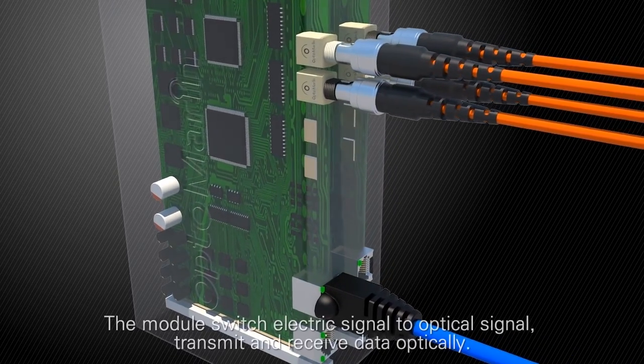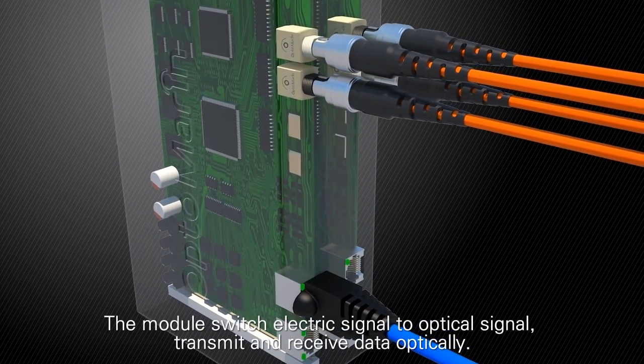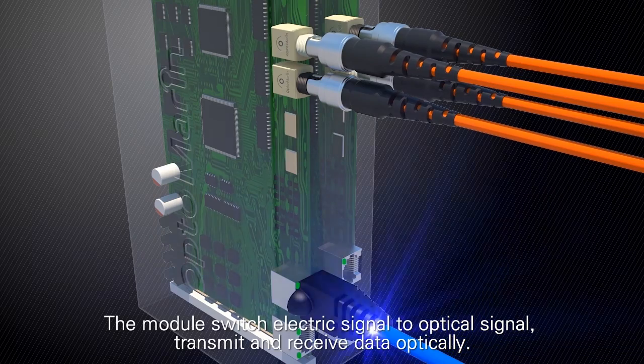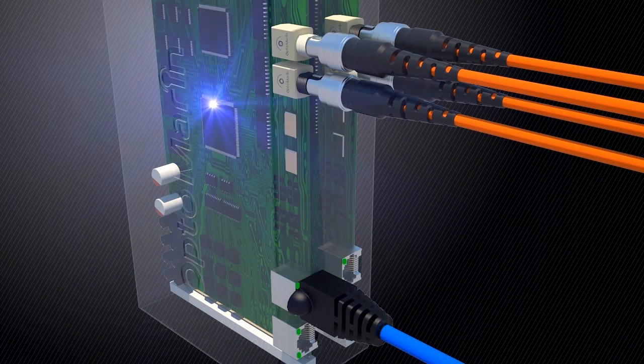Optical communication in industry converts electric signal to optical signal in order to transmit and receive data optically.